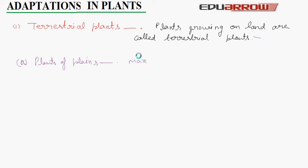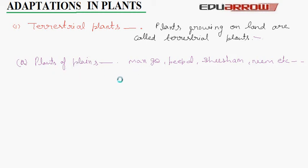These trees shed their leaves in winter to protect themselves from cold weather. They have lots of branches and leaves in other seasons — there can be heat but not cold. These types of plants are called mesophytes. Meso means land and phyte means plant, so mesophytes means land plants.